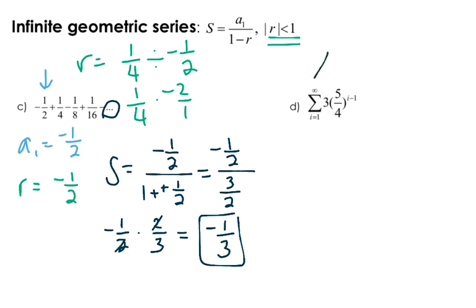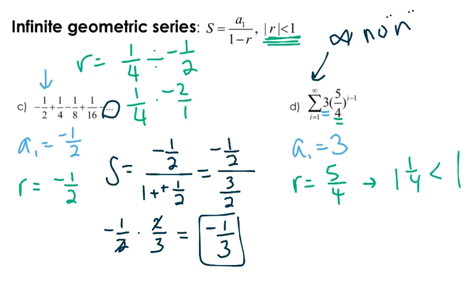Alright, another infinite series. I can tell it's infinite because it's got the infinity sign. No end, it's never going to end. A sub 1, right here, a sub 1 is 3. R is what's in the parentheses, you know, raised to the exponent there. So my R value is 5 fourths. Always check. Is 5 fourths less than 1? Nope. 5 fourths is really 1 and 1 fourth. This is not less than 1.